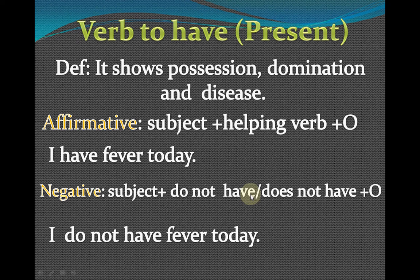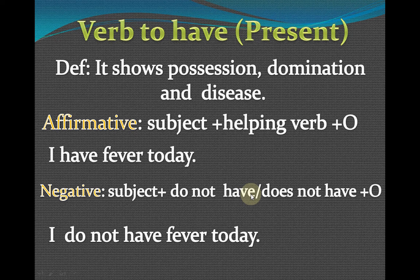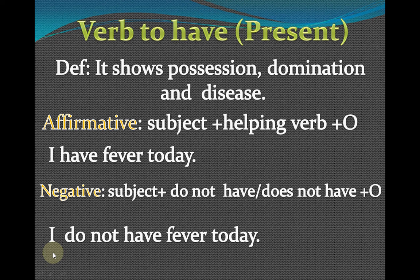For a negative sentence, the formula is: subject plus 'do not have' or 'does not have' plus object. 'Do not have' and 'does not have' are used according to the subject. For example: 'I do not have fever today.' This shows negation in the sentence — we use this form whenever we want to show negation.